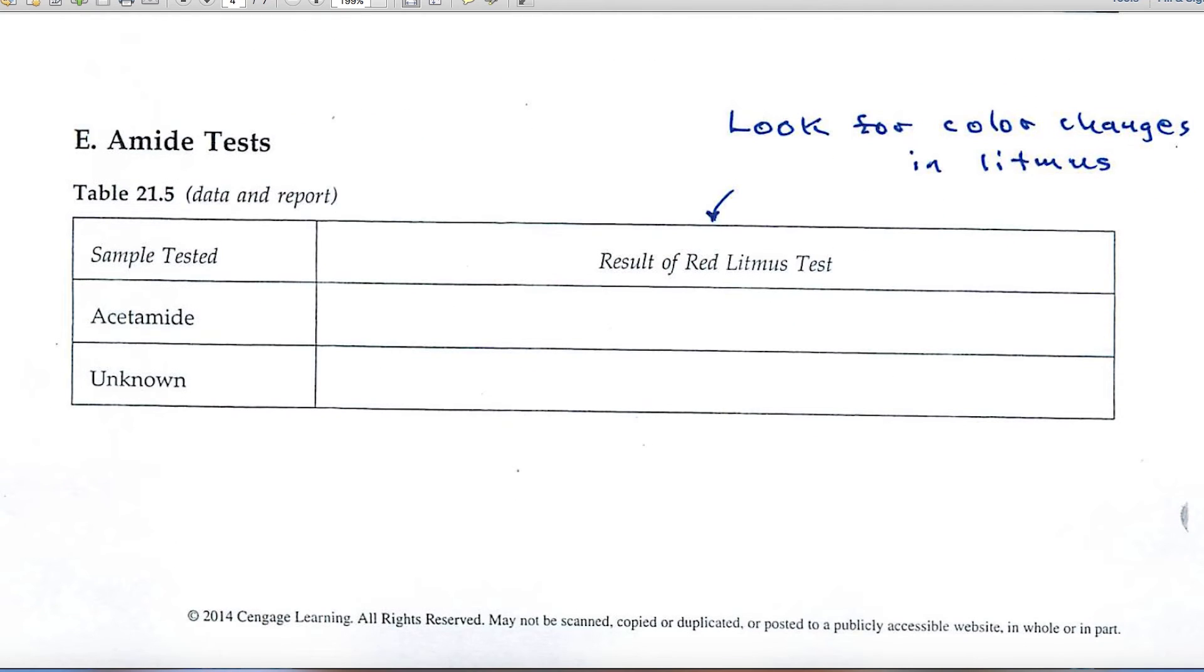Part E deals with amines. Result of adding the sample to red litmus - you'll look for color changes. Specifically, you'll see if the red litmus changes to blue or not.